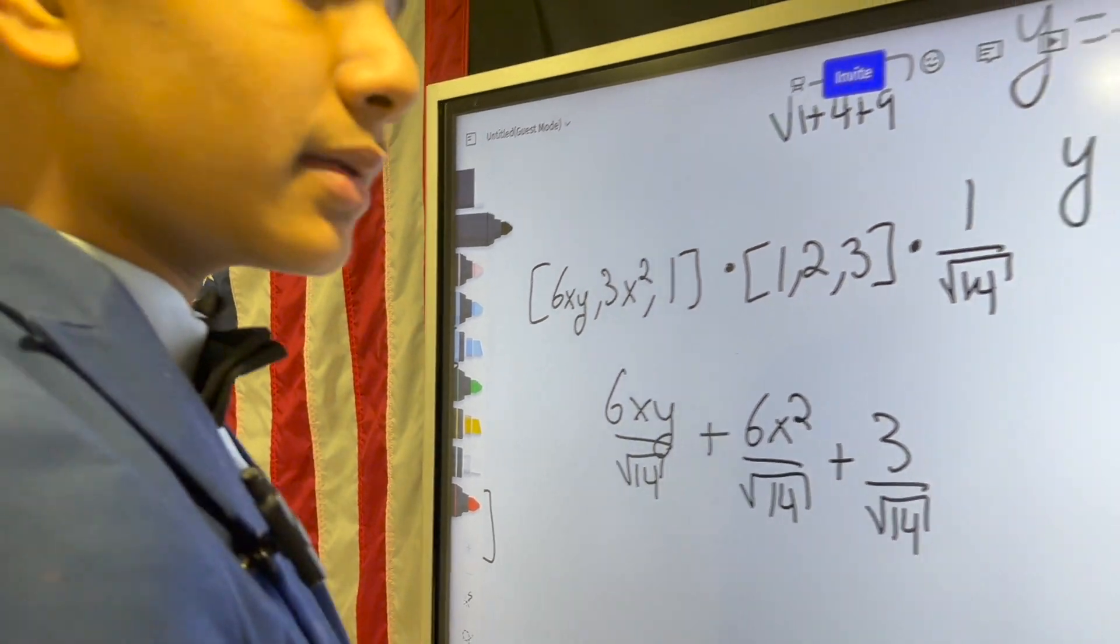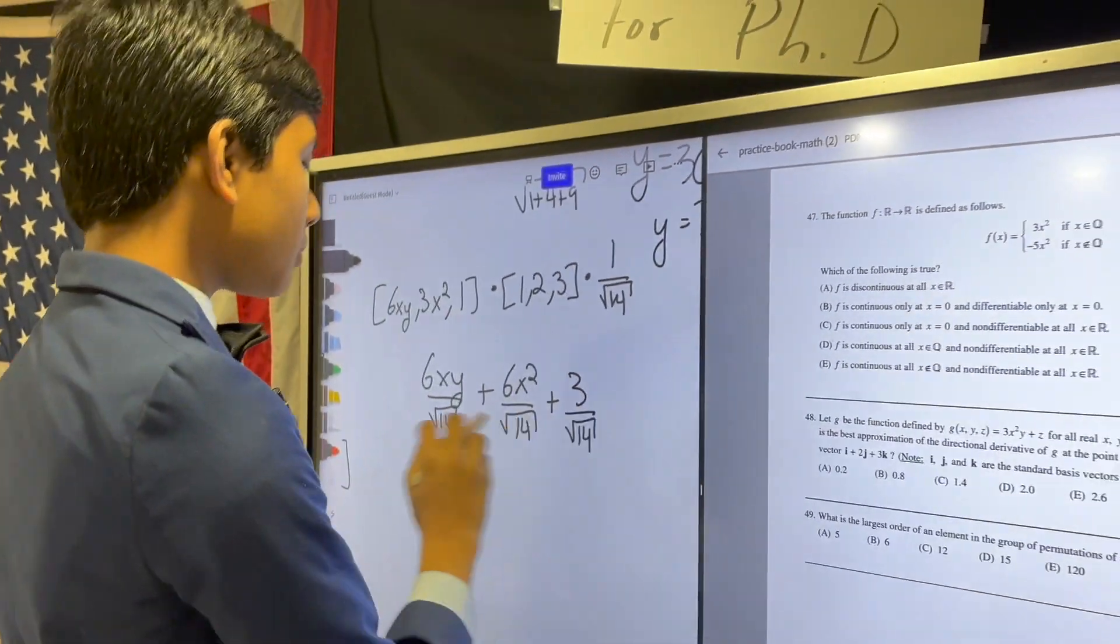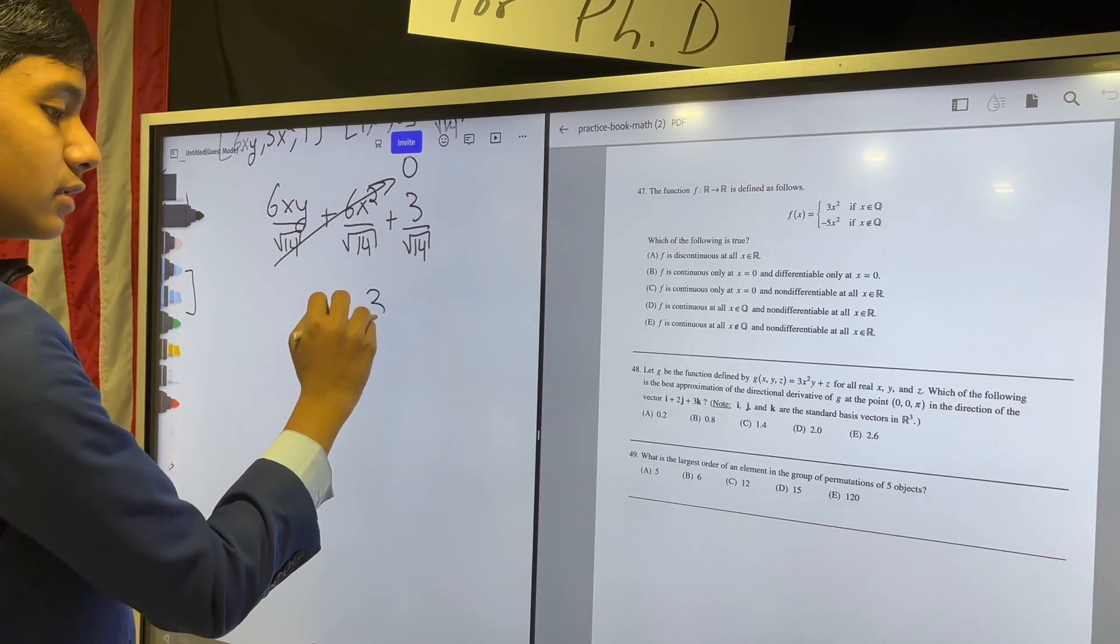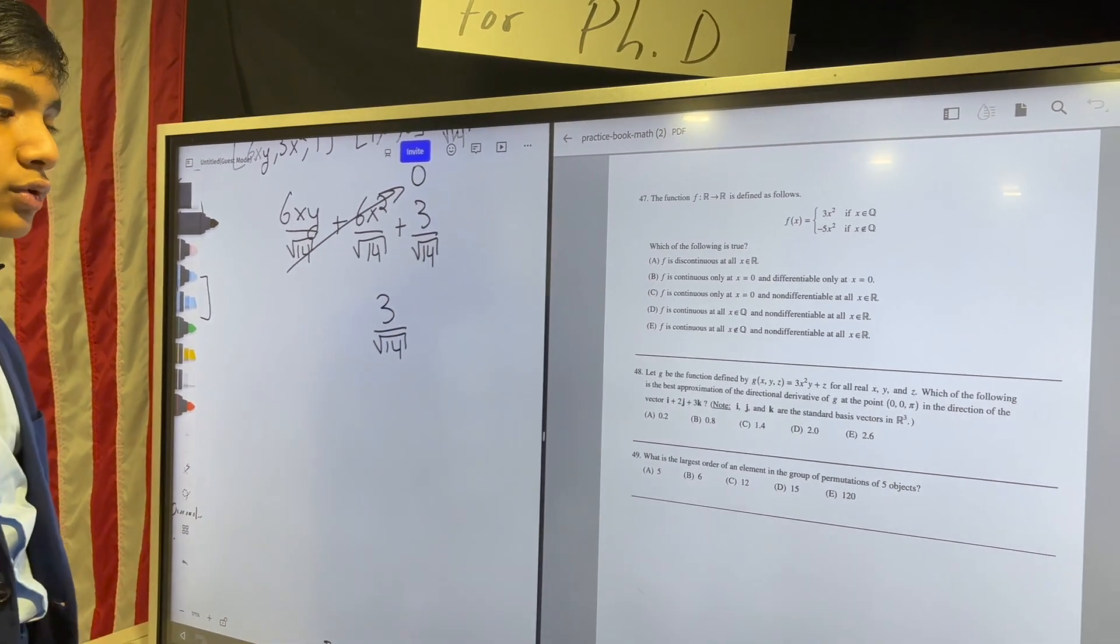But the thing is, when plugging in the point, x and y are both 0, so these two don't matter. All we have to do is find 3 over √14.